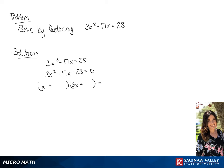For the second terms, we are going to factor 28 into negative 7 and 4. So we have x minus 7 times 3x plus 4 equals 0.